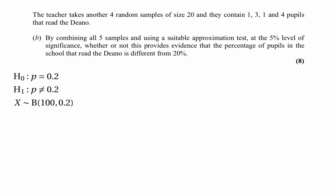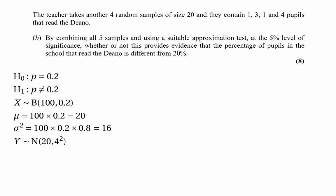To apply the normal approximation, we find the mean and variance. The mean is 100 times 0.2, which is 20. The variance is 100 times 0.2 times 0.8, which is 16. So the approximating random variable Y has the normal distribution with mean 20 and standard deviation 4. The actual test statistic is 9 plus 1 plus 3 plus 1 plus 4, giving a total of 18 students reading the Dino out of 100.